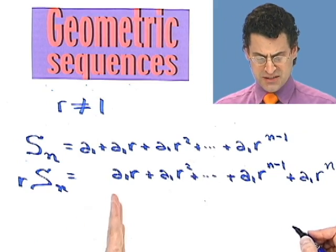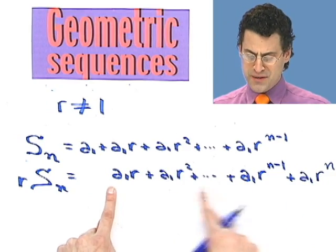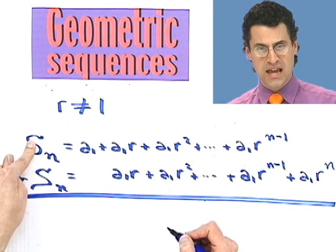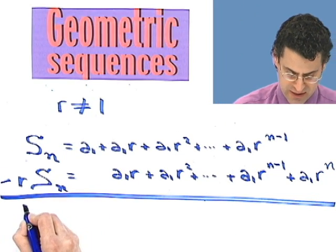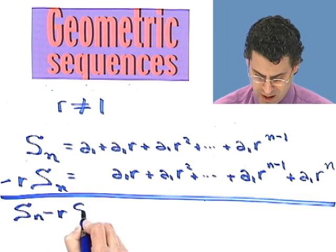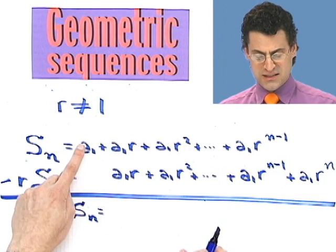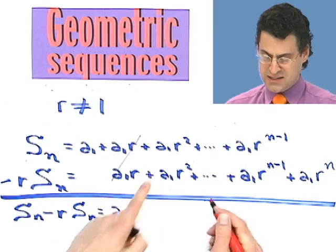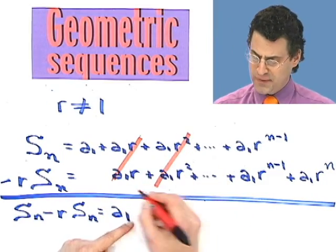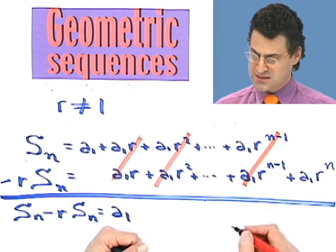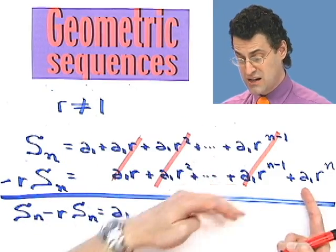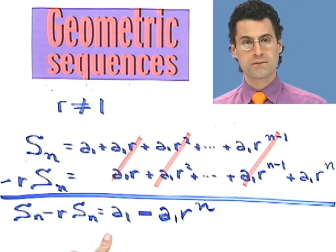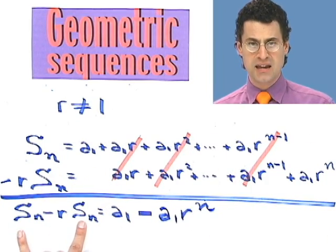It doesn't look too helpful at first, except you'll notice that these middle terms all line up perfectly. All that mystery stuff seems to be appearing twice. So if I take s_n minus r·s_n and subtract, I see a1 minus 0 — that's just a1. Then a1r minus a1r is 0. Then a1r squared minus a1r squared is 0. All these terms cancel up through a1r to the n minus 1. And I'm left with that last term, which is now negative. So all the dot dot dots have gone away.